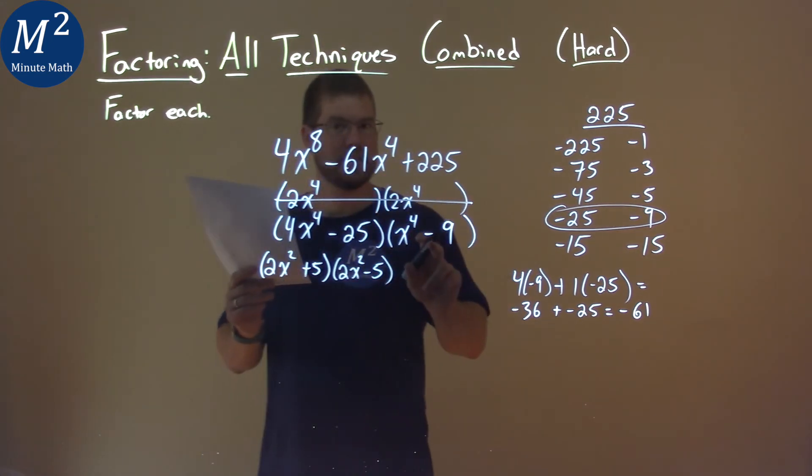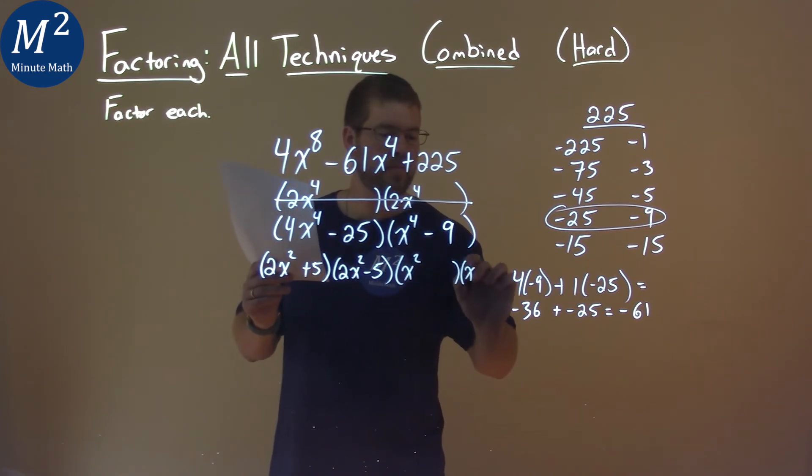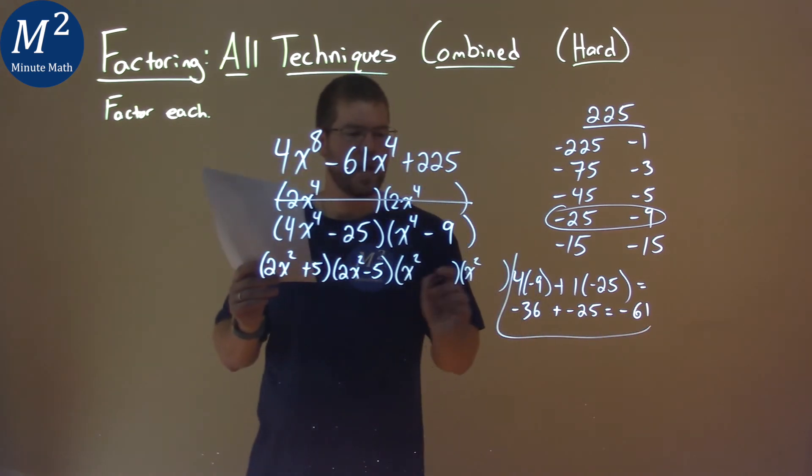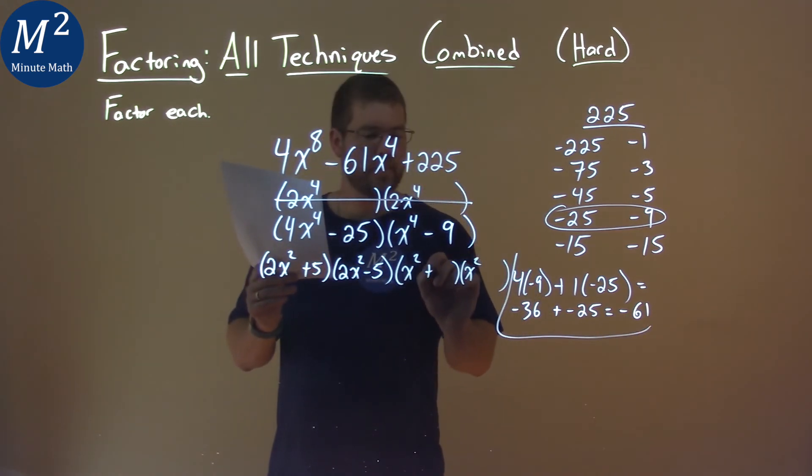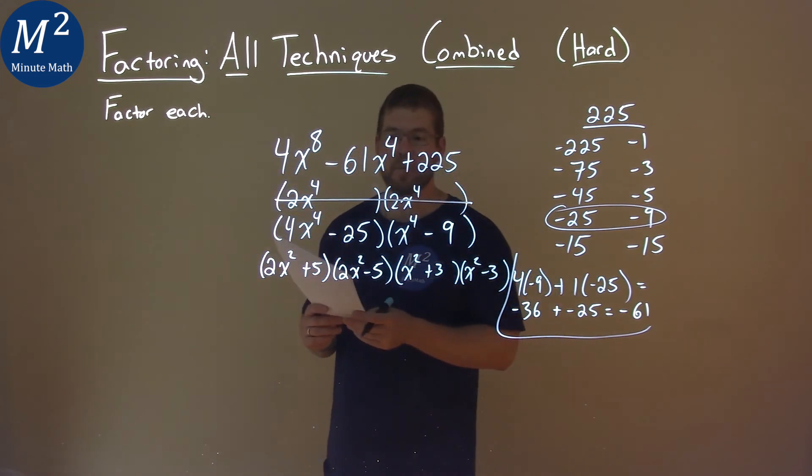Same thing actually applies here as well. x squared and x squared fit it here. Pull that out. And then if we have a plus 3 and minus 3, 3 times negative 3 is 9. Add them together, we get a 0. And x squared times x squared is x to the 4th.